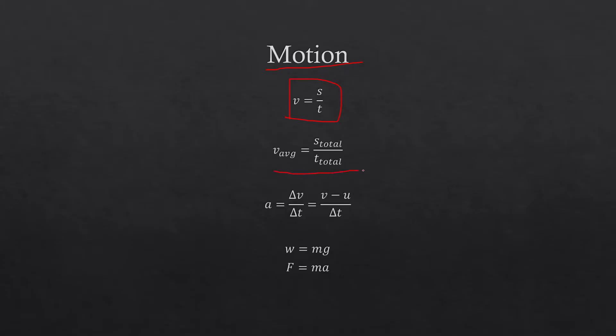Average velocity is equal to the total displacement by the total time, and the more commonly used one would be average speed, which is equal to total distance by total time.